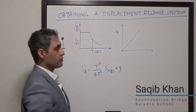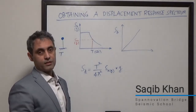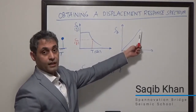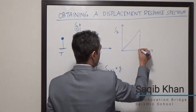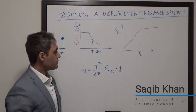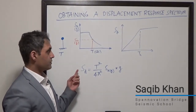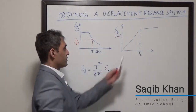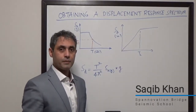A lot of codes, especially when they talk about the direct displacement-based design, want to cap this value. They give you what we call the corner period or TC, and beyond that, the displacement spectrum more or less goes flat. The codes recognize the fact that the spectral displacement cannot grow indefinitely — it goes to a certain point and then as the period goes up, you cap that value.